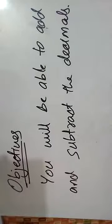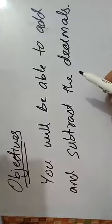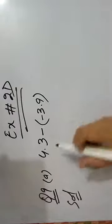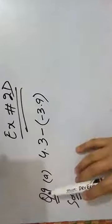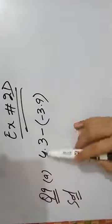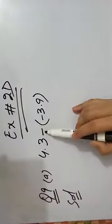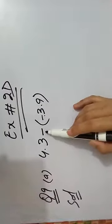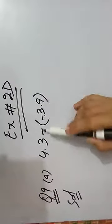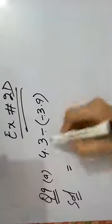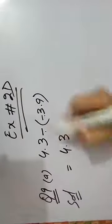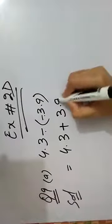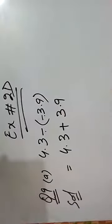So start our lecture now. Exercise 2D, question number 9, part A is 4.3 minus negative 3.9. First, we will change these signs. So let's start: 4.3, negative into negative is positive, 3.9. We will add these numbers.